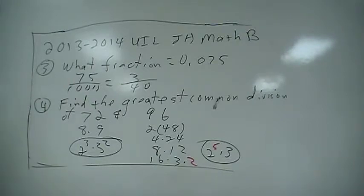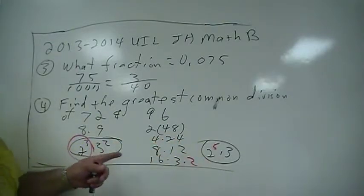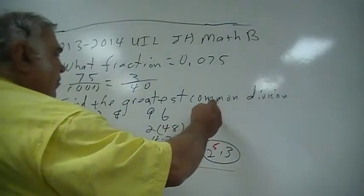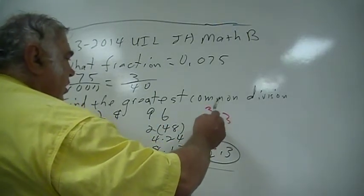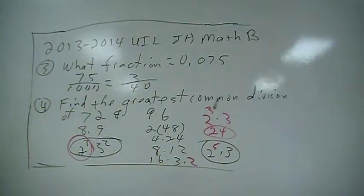And so the greatest common divisor would be 2 to the 3rd. If you think about it, there's at least 2 to the 3rd and a 3. 2 to the 3rd times 3, which would be 8 times 3 or 24. So the answer here is 24.